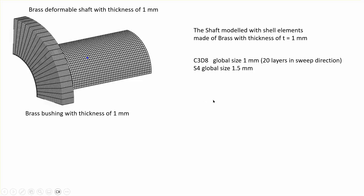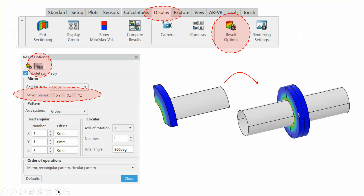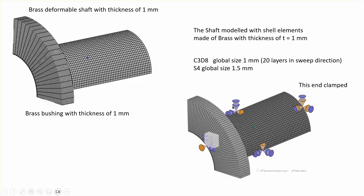The shaft thickness is assumed to be 1 mm. For the linear brick elements the size is 1 mm with 20 layers in the circumferential direction, and 1.5 mm for the shell elements. Because symmetry is used, the edges must be properly restrained with symmetrical boundary conditions, and the end of the shaft is assumed to be entirely clamped.